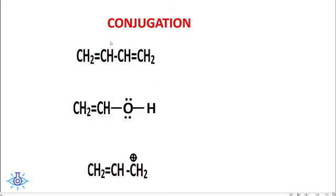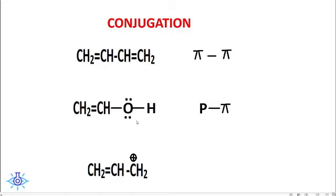There are different types of conjugation. When a pi bond is followed by a single bond and then another pi bond, it is called pi-pi conjugation. When a pi bond is in conjugation with a p orbital (lone pair), it is called p-pi conjugation. When a pi bond is in conjugation with a positive charge, those compounds are resonance-stabilized due to conjugation.